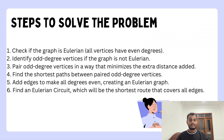The steps to solve the Chinese postman problem are: first, check if the graph is Eulerian; second, identify the odd-degree vertices if the graph is not Eulerian; third, pair odd-degree vertices in a way that minimizes the extra distance added; fourth, find the shortest paths between paired odd-degree vertices; fifth, add edges to make all degrees even, creating an Eulerian graph; and sixth, find the Eulerian circuit, which will be the shortest route covering all edges.